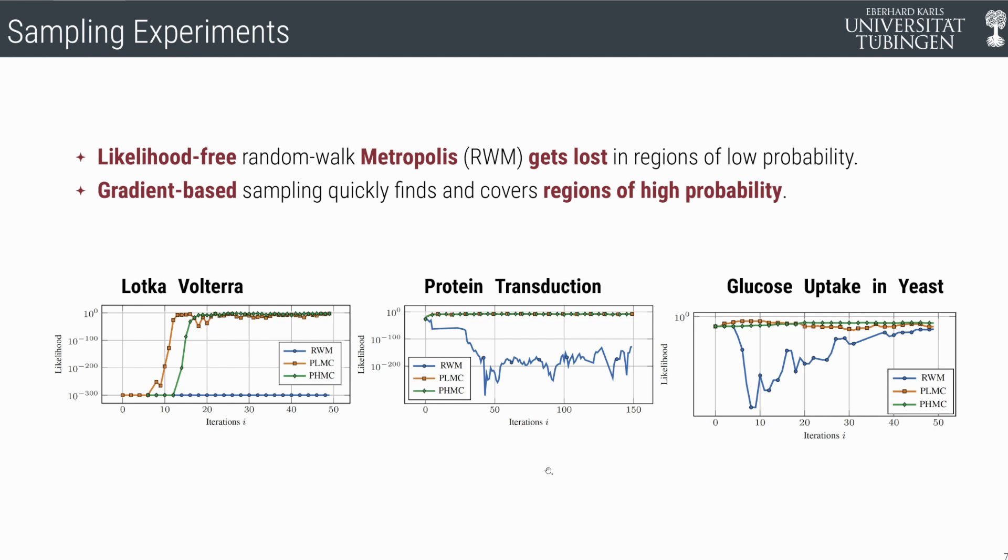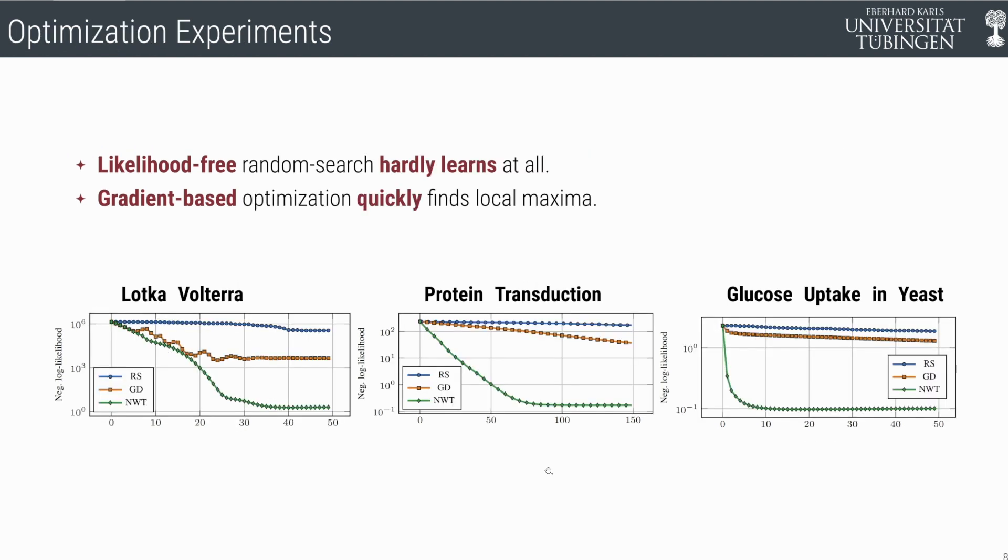What about optimization? What about if we use gradient descent or Newton? The difference is even more strongly pronounced here. Here you see, again, the blue line is the likelihood-free optimization method, random search.